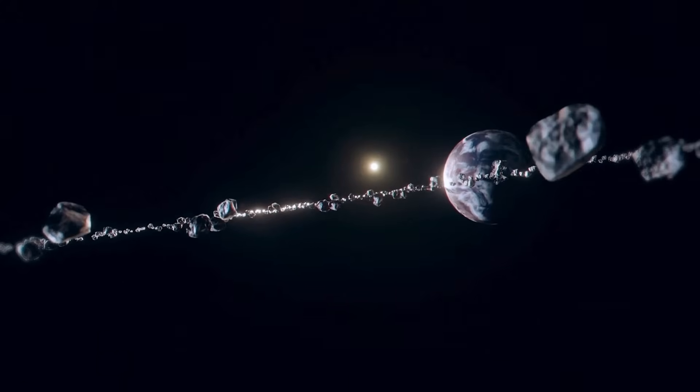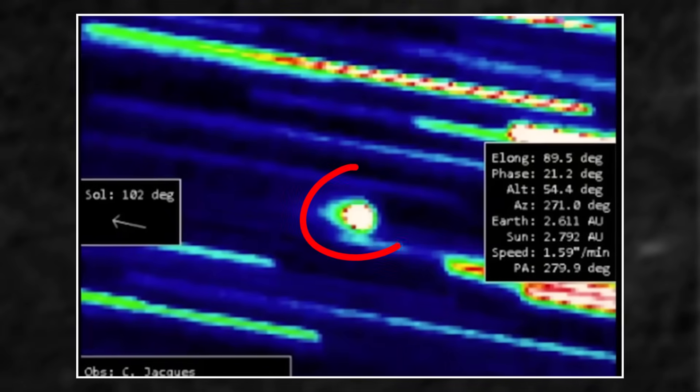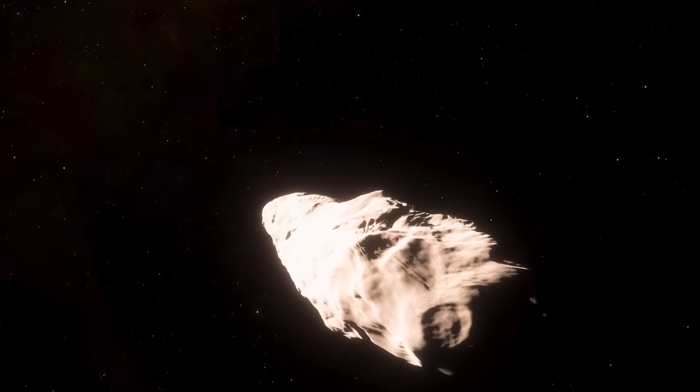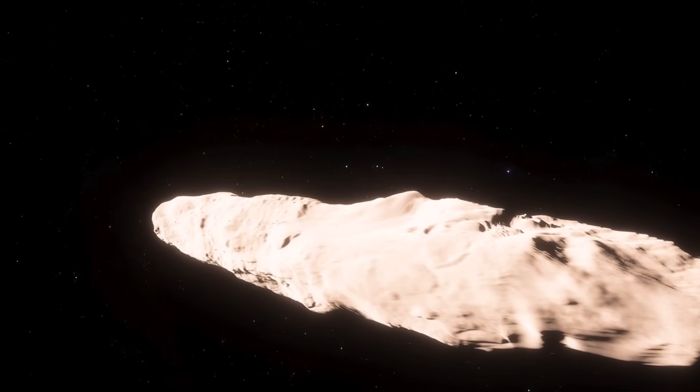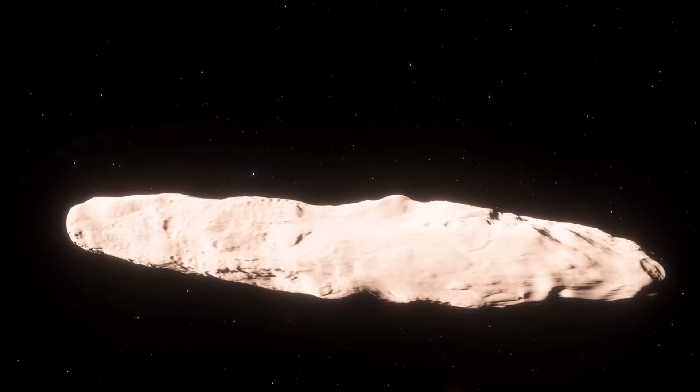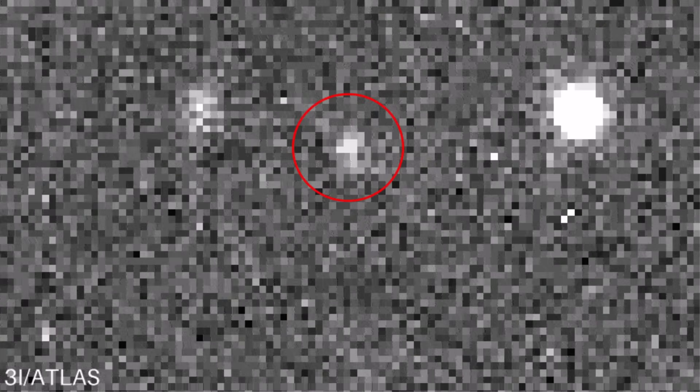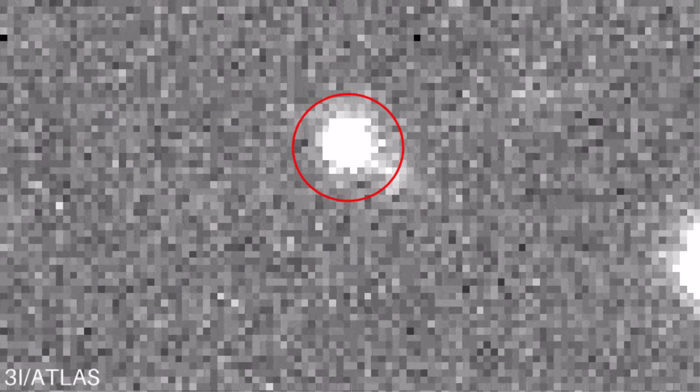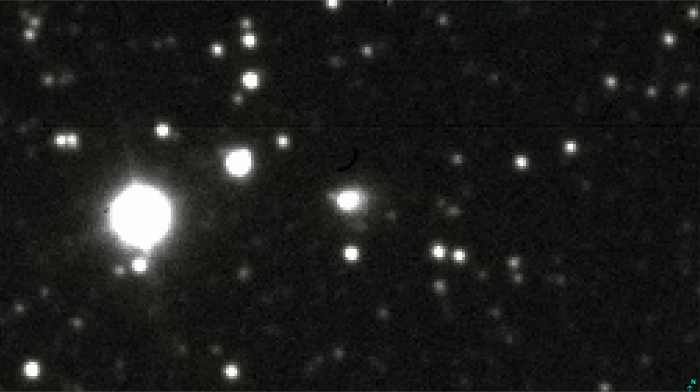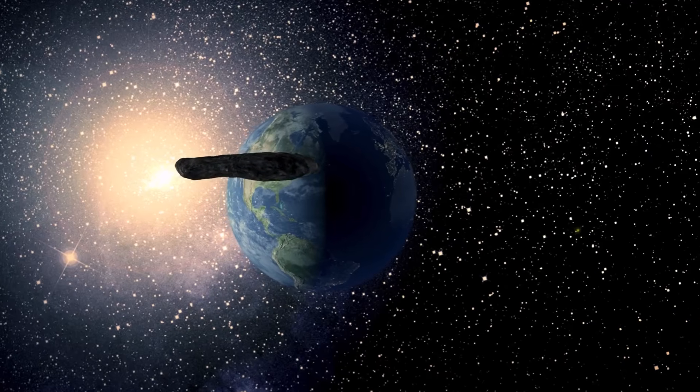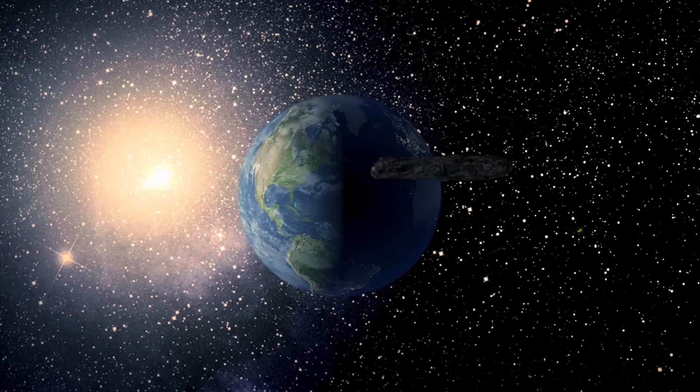Especially when you consider the rest of its behavior. Because with each passing day, with every new observation, 3i Atlas' trajectory grows stranger. The more data we feed into our computers, the less it behaves like a random object tumbling through space. Natural objects are messy. They are slaves to gravity, pulled and nudged in predictable ways. But Atlas' path feels clean. It feels economical. Almost as if it's correcting its own course. This raises a deeply unsettling question. Are we simply observing a rock? Or are we tracking a pilot?